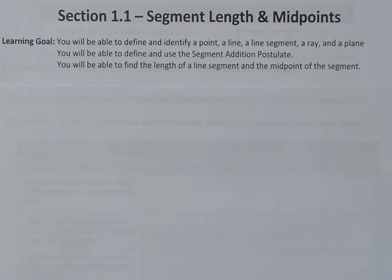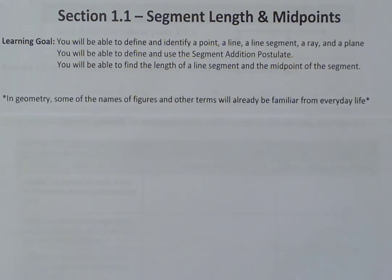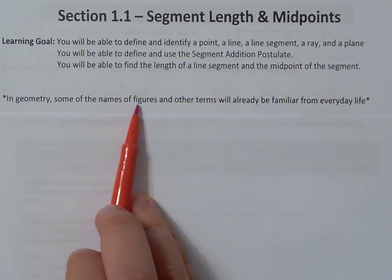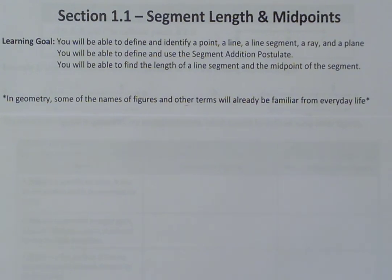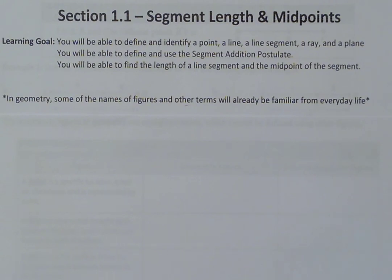Before we jump into all of our terms today, one thing I just want to make a quick note of. In geometry, some of the names of figures and other terms will already be familiar to you from everyday life. For example, if I said a triangle, you already know what a triangle looks like and some of its properties — just as if I were to talk about a sphere, a cone, a point, a line, and so on. You can relate a lot of this to everyday life, and we're just going to build off that and explain it a little bit more.